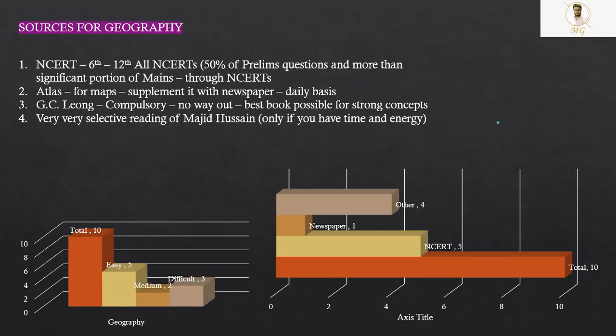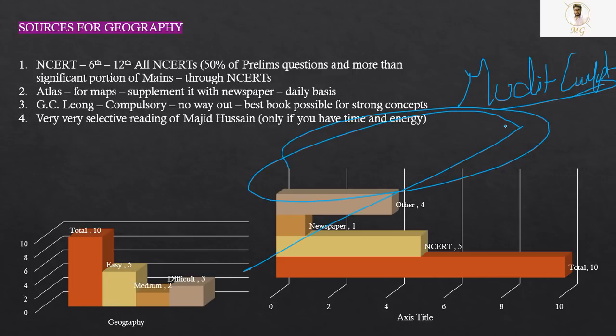So NCERT 6 to 12th, Atlas, GC Leong and very very selective reading of Majid Hussain. If you plan to subscribe to Unacademy Plus, you can use my referral code Mudut Gupta for 10% discount. You can join my telegram channel t.me/mudutgupta and you can also email me. Thank you very much.